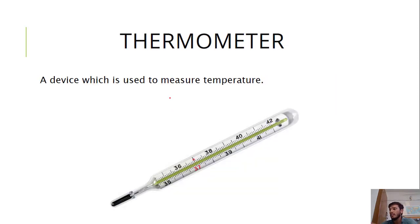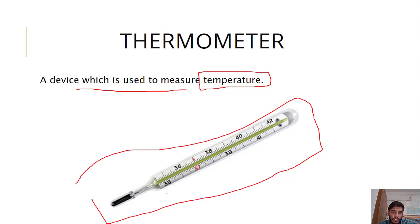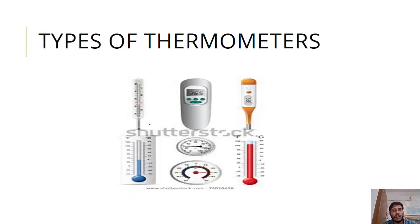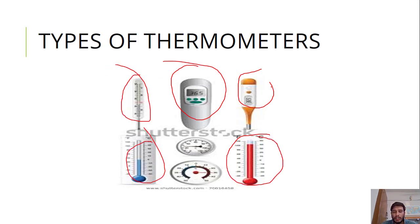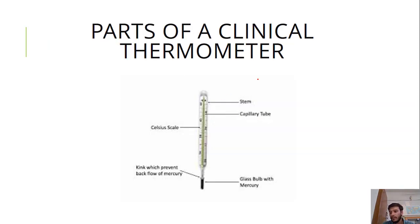What is a thermometer? A thermometer is a device which is used to measure temperature. The picture shown here is a clinical thermometer. It measures temperature from 35 to 42 degrees Celsius. We have different types of thermometers - digital thermometers, liquid-based thermometers, clinical thermometers, laboratory thermometers. Here we will study parts of a clinical thermometer.